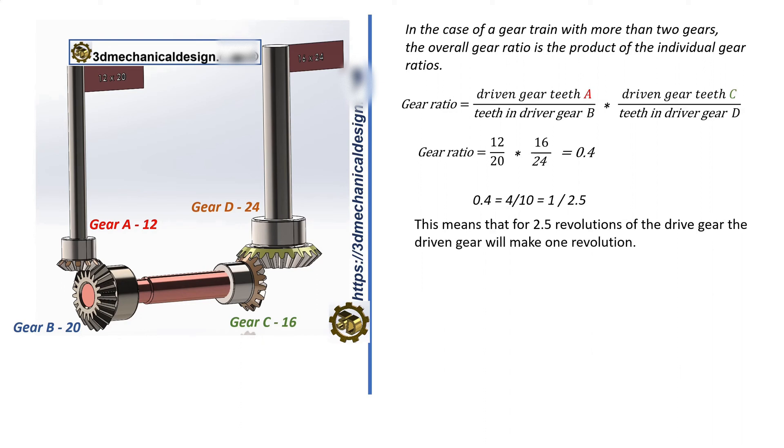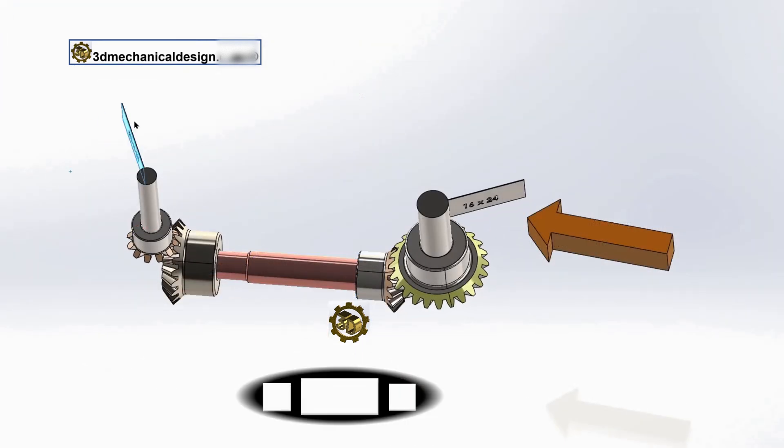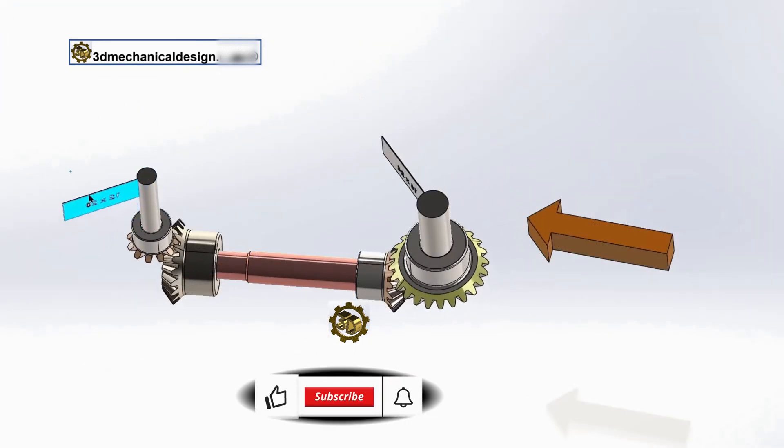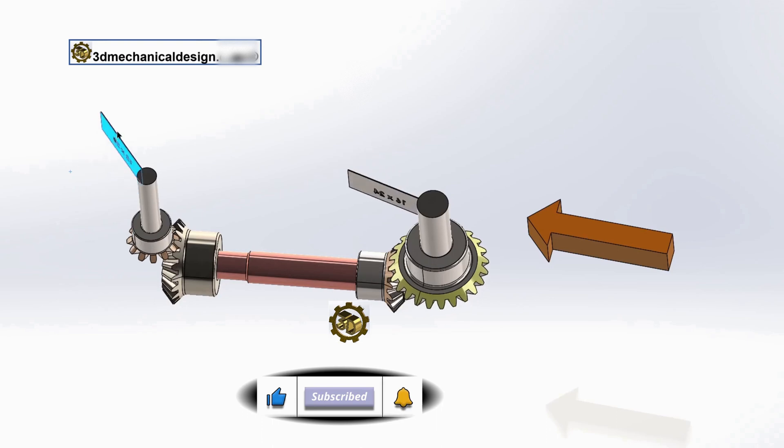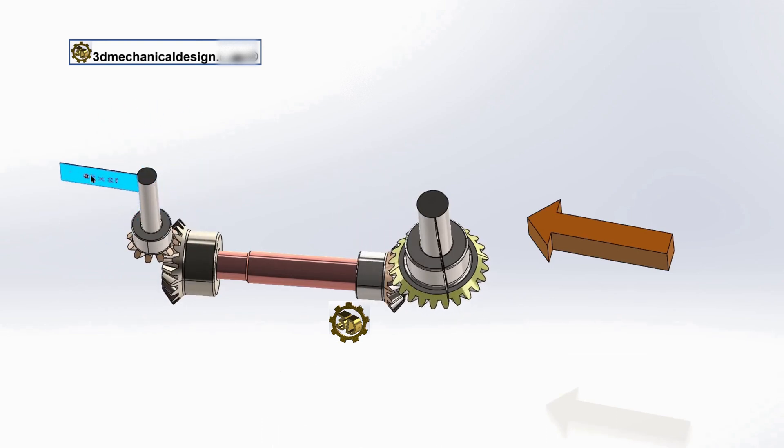Let's watch the video. Turn the drive gear one turn, another turn and another half turn. We see that the driven gear has made one revolution.